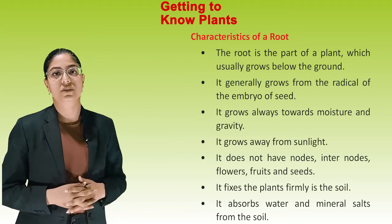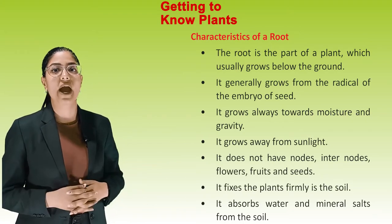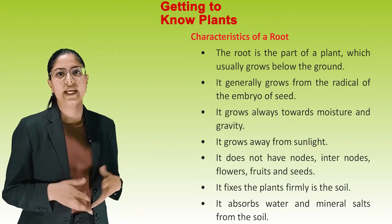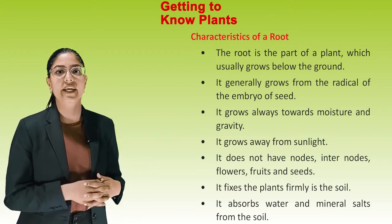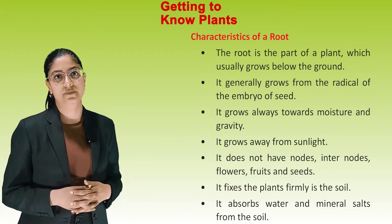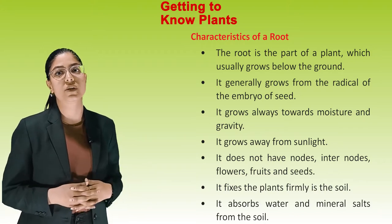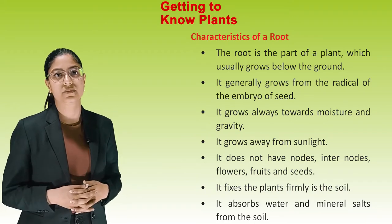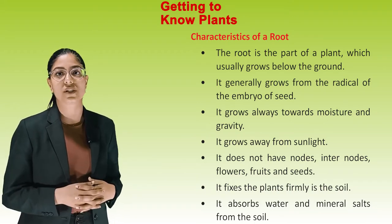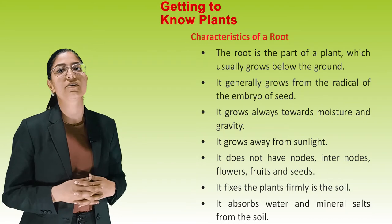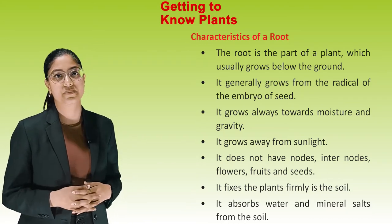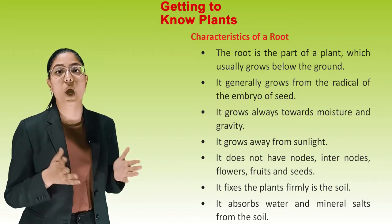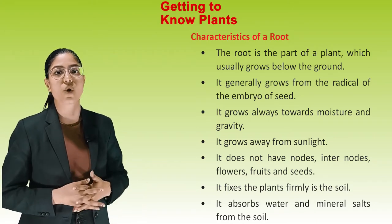Characteristics of a Root: The root is a part of a plant which usually grows below the ground. It generally grows from the radicle of the embryo of a seed. It grows always towards moisture and gravity, and grows away from sunlight. It does not have nodes, internodes, flowers, fruits and seeds. It fixes the plant firmly in the soil and absorbs water and mineral salts from the soil.